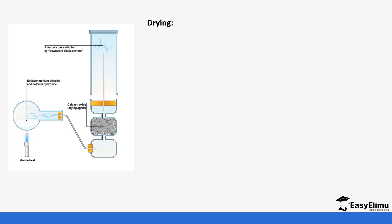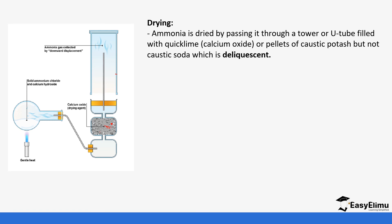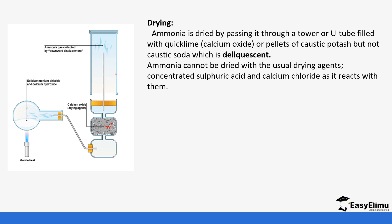For drying, the gas is passed through calcium hydroxide in a chamber and then collected by upward delivery. Ammonia is dried by passing it through a tower containing quicklime — calcium oxide — or pellets of caustic potash, but not caustic soda, which is deliquescent. We do not use caustic soda because it absorbs moisture; if it forms a solution, that will interfere with the reaction.